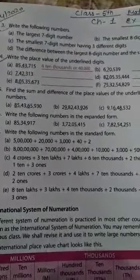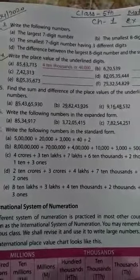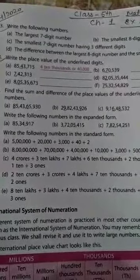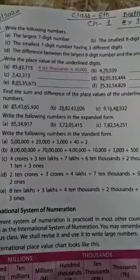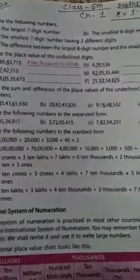The question is: write the following number — the 7-digit largest number or smallest digit number. First of all, we have to understand how to write the largest and smallest digit.